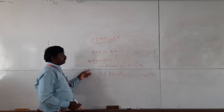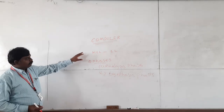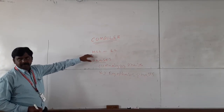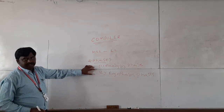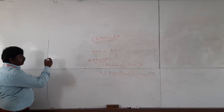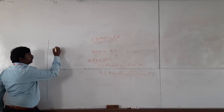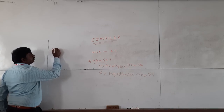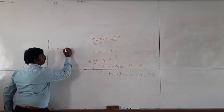Based on these phases, the compiler converts high-level programming language to low-level programming language. By understanding these phases, we see that a compiler has six phases in total. The first one is the lexical analyzer.